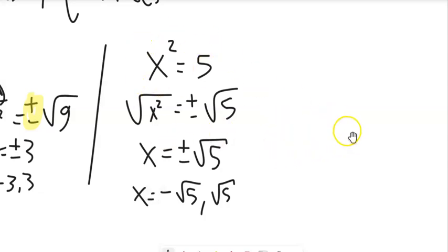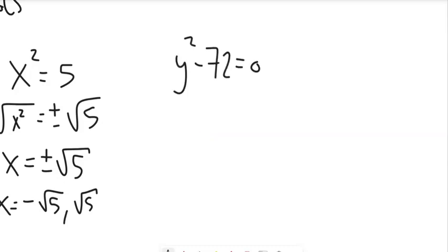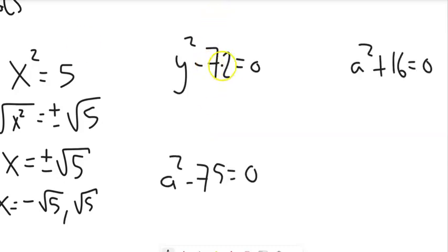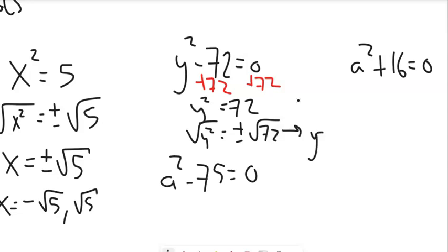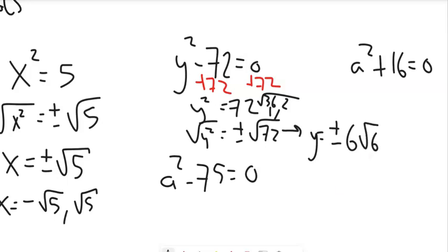We're going to build on this idea by solving some more problems. I have y squared minus 72 equals 0. I don't have a difference of squares, so I'll get the y squared all alone and then square root. I'll add 72 to both sides, then square root both sides — remember, plus or minus comes in with it. So I get y equals plus or minus square root of 72. Since 72 is 36 times 2, the square root of 36 is 6, giving me plus or minus 6 root 2.